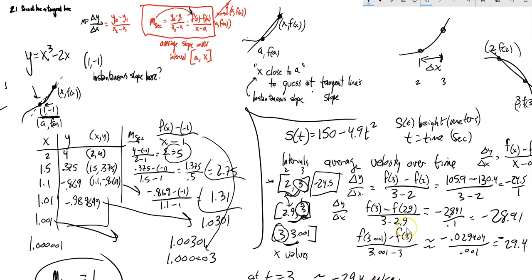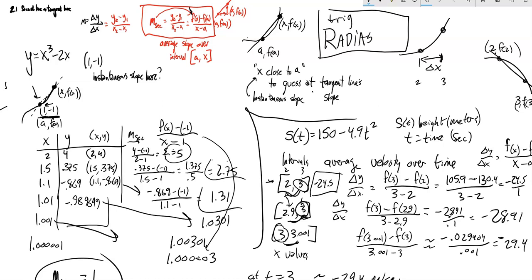We're finding secant lines over and over, sliding that point closer and closer to give a reasonable guess for the slope of the tangent line. When we have context of height and time, the slope of the secant line gives average velocity, while the slope of the tangent line gives instantaneous velocity. One important reminder: if you have anything with trig in it, make sure you are in radians — always assume radians unless it specifically says degrees. Give the assignment a try and post any questions you have.